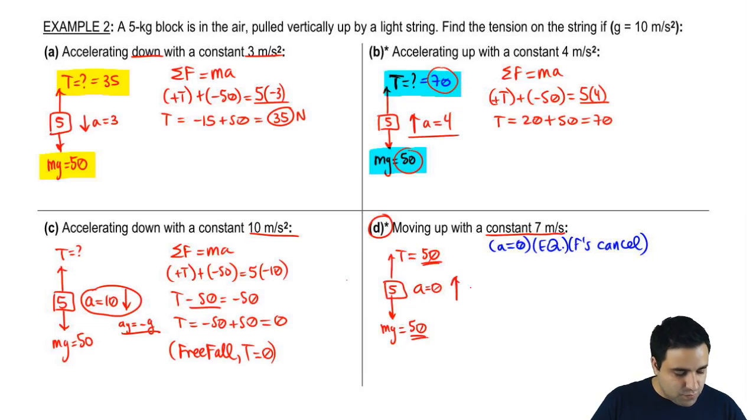So that means that this tension has to be a 50 as well, so that it cancels. The fact that this object is moving up with a 7 doesn't matter. It doesn't mean that the force pulling up is stronger. The forces cancel. The acceleration is zero. Then it keeps moving with constant velocity. It's moving with a 7 because at some point it had 7. It was given 7 meters per second. It was accelerated to 7, but then the force is balanced.